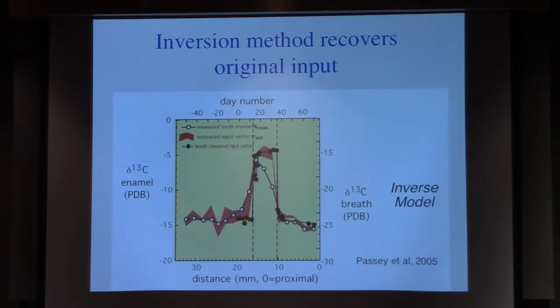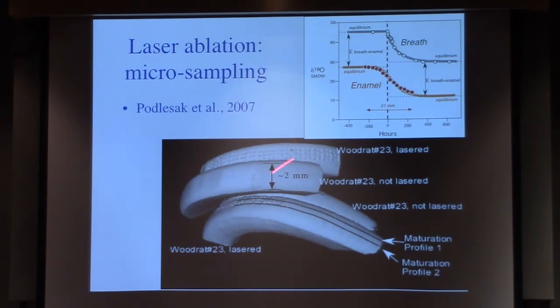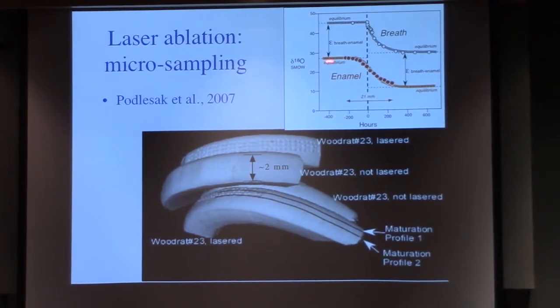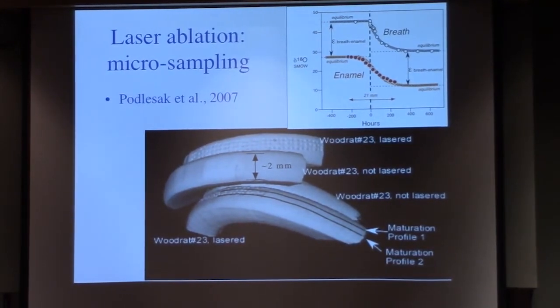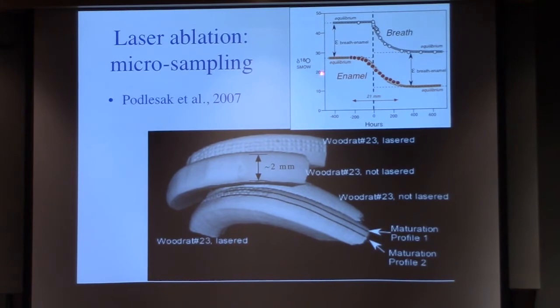Some other ways to sample things - this is laser ablation methods that we're doing in one of the labs. This is the same wood rats that we did the breath experiments on. We later got their teeth. This is the breath you already saw the data for. This is the enamel - you see that actually does not give exactly the same shape. Very abrupt start, exponential decay, and this is what the enamel actually looked like.